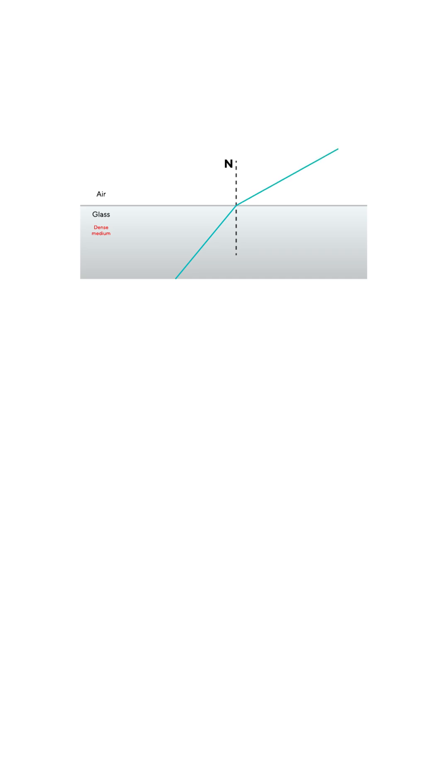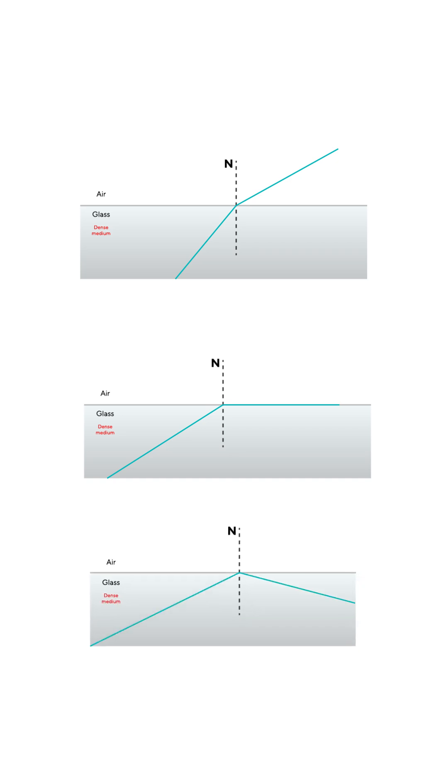SPR occurs when light moves from an optically dense medium to a less dense medium, such as from glass to air. It moves away from normal, and at an angle greater than the critical angle, it undergoes total internal reflection.